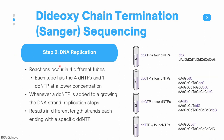The next step in Sanger sequencing is the DNA replication. Reactions occur in four different tubes; each tube has the four dNTPs and one specific ddNTP at a lower concentration. Whenever a ddNTP is added to a growing DNA strand, the replication stops, resulting in different length strands each ending with a specific ddNTP. The ratio between ddNTPs and dNTPs in each tube must be optimized — too much ddNTP results in very short fragments, and not enough results in very long fragments.